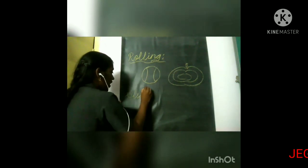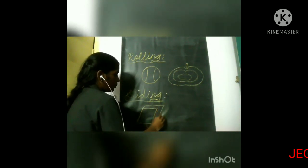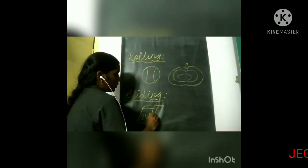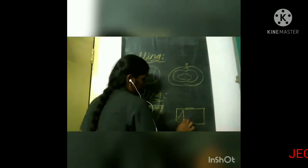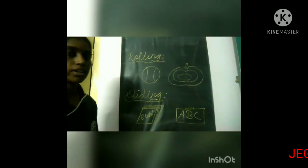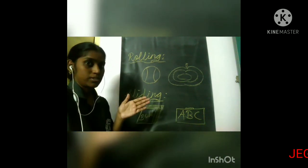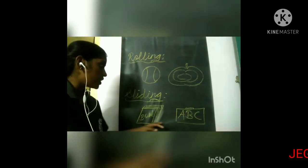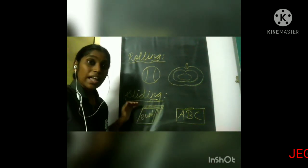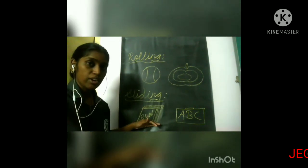The second one is sliding. Now imagine the book — it's a book. And one more thing: it's a slate. Now imagine these two things in your mind. These two objects have a flat surface. It is not round in shape; it has a flat surface. So these two objects are sliding on the slide. These are called sliding objects.